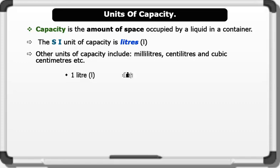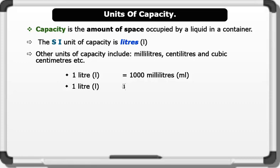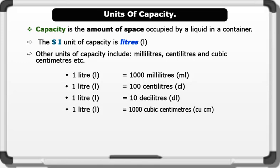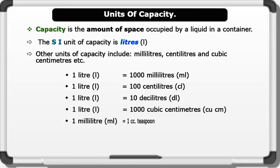1 liter equals 1000 milliliters. 1 liter equals 100 centiliters. 1 liter equals 10 deciliters. 1 liter equals 1000 cubic centimeters. 1 milliliter equals 1 cubic centimeter.